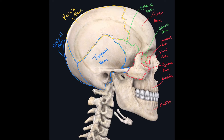Now there's a bone that's not part of the bones of the skull, but is part of the bones of the head — it's this one down here. This is called your hyoid bone. Those are most of the bones of the head that we can see on this lateral view.